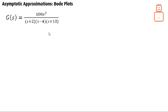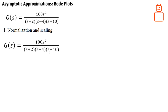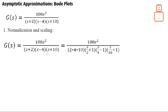The first step is normalization and scaling. We can normalize this transfer function as we did in a previous example — just factor out each pole or zero. I factored out the four, but I didn't take the negative sign, just the absolute value of four. I also took out 10, as you can see in the final normalized format.